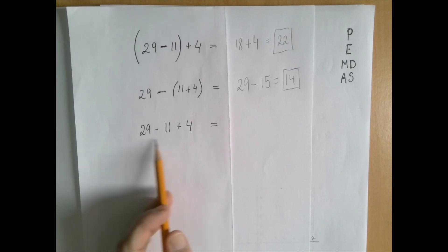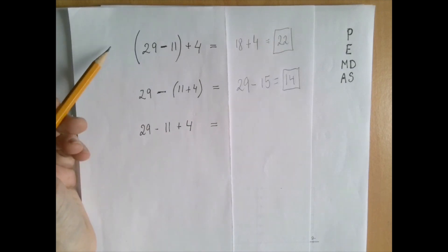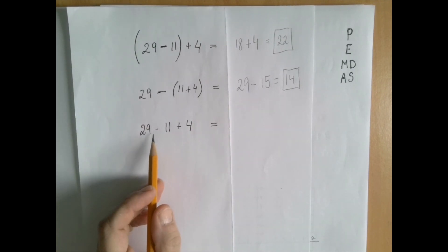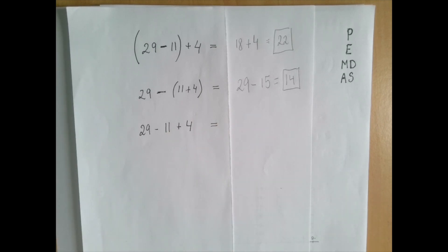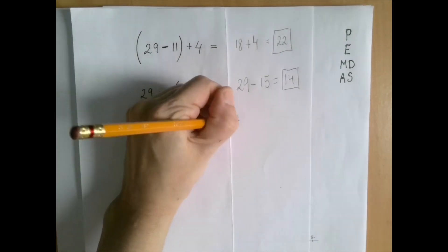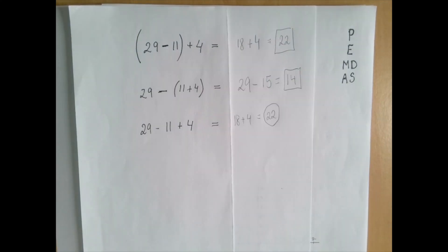So first, so basically this problem is the same as this first one because first we perform the subtraction, 29 minus 11 is 18, and 18 plus 4 is 22. Thank you for watching.